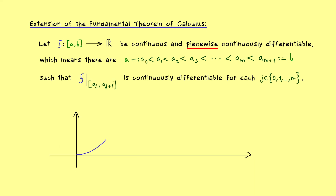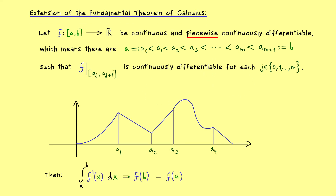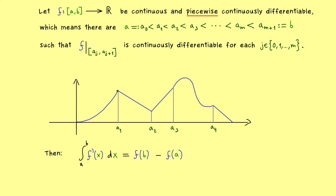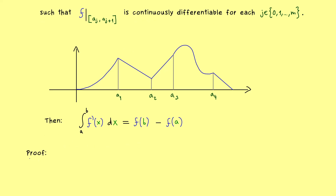For example, the graph could look like a sequence of smooth pieces joined together — we can have corners, but only finitely many. Exactly at these corners we place our intermediate points a₁, a₂, and so on. The claim is that the fundamental theorem of calculus still holds in this case. There is no problem defining the left-hand side because only finitely many points are undefined for the derivative. Moreover, this gives us the idea for the proof: we simply apply the original fundamental theorem finitely many times.